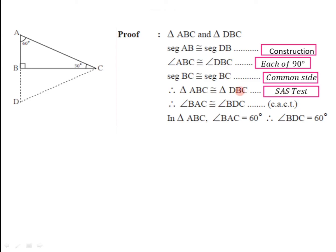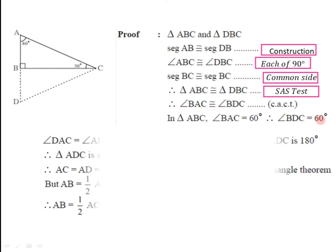If these two triangles are congruent then their corresponding angles are also congruent. If we consider angle BAC, its corresponding angle is BDC, so these two must be congruent. The reason is corresponding angles of congruent triangles. But the measure of angle A is given to be 60 degree, so if measure of angle BAC is 60 degree, measure of angle BDC is also 60 degree.